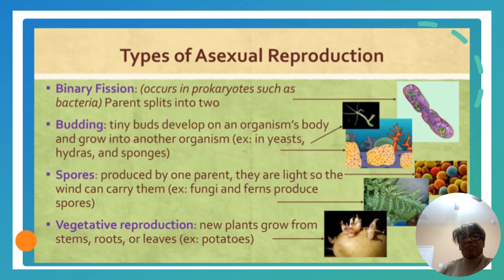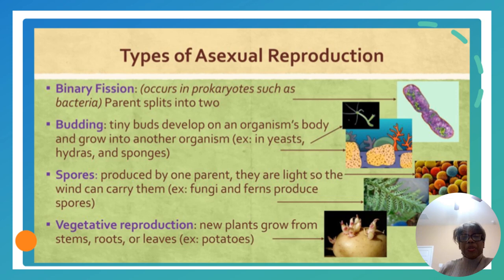In terms of asexual reproduction in plants, we've talked about binary fission in prokaryotes, but in plants there are also spores and vegetative reproduction. Spores are found on the underside of fern leaves. Vegetative reproduction occurs when new plants grow from stems, roots, or leaves. These are types of asexual reproduction in plants, and we will talk more about spores.